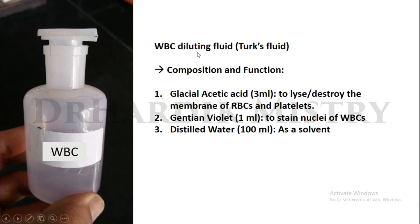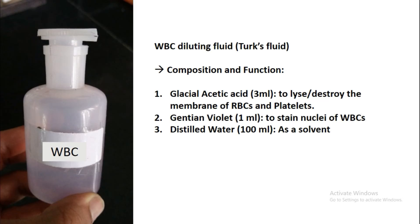WBC diluting fluid, or Turk's fluid — composition and function. Every 100 ml contains 3 ml of glacial acetic acid, 1 ml of gentian violet, and 100 ml of distilled water. The function of glacial acetic acid is to lyse or destroy the membrane of RBCs and platelets. The function of gentian violet is to stain the nuclei of WBCs. Distilled water acts as a solvent.